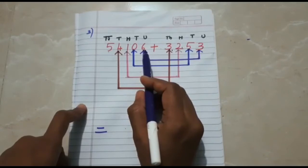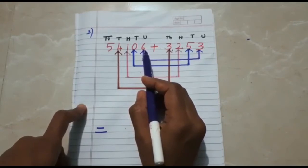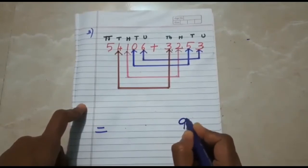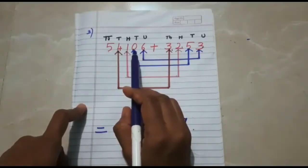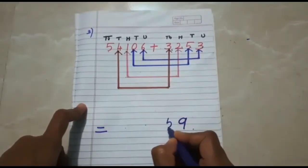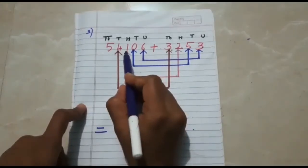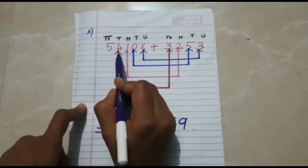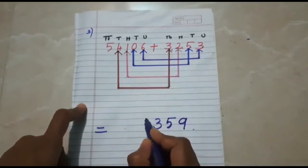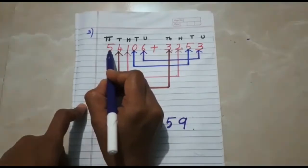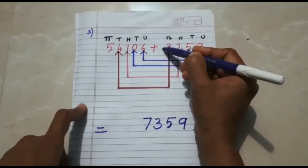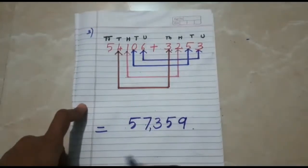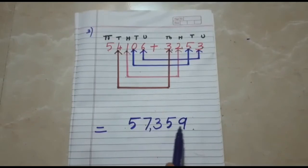We must begin the addition always from the units: 6 plus 3 is 9. Then tens: 0 plus 5 is 5. Then hundreds: 1 plus 2 is 3. Then thousands: 4 plus 3 is 7. Here, the place value of 5 is ten-thousands, but we do not have any digit corresponding to ten-thousands in the other number, so we write it as it is. Our final answer is 57,359.